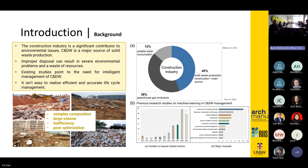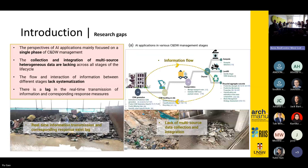However, realizing efficient and accurate life cycle management is challenging due to the complex composition of waste, larger material value, inefficiency, and poor optimization. Through the literature review, I have found several research gaps. The first is that AI applications mainly focus on a single phase of construction and demolition waste management. Collection and integration of multi-source data are lacking across all lifecycle stages. Information flow and interaction between stages lack systemization, and real-time information transmission and response are lagging.